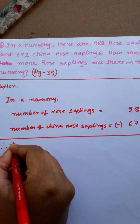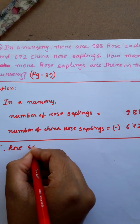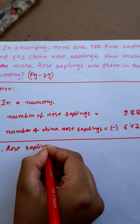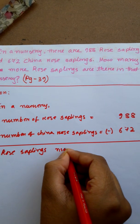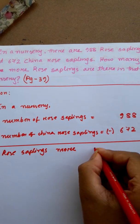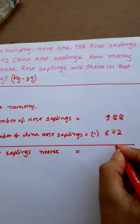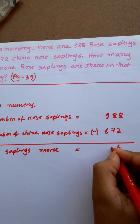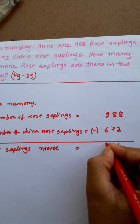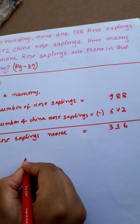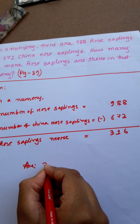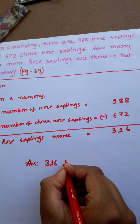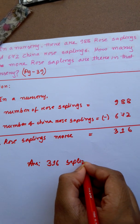Therefore, rose saplings more: 8-2, 6, 8-7, 1, 9-6, 3. So the answer is 316 saplings.